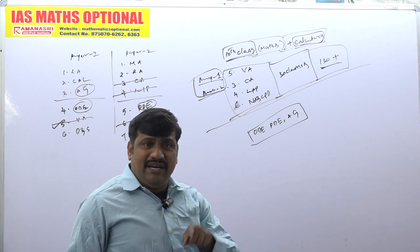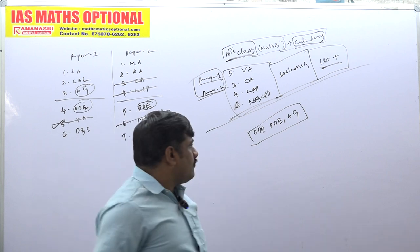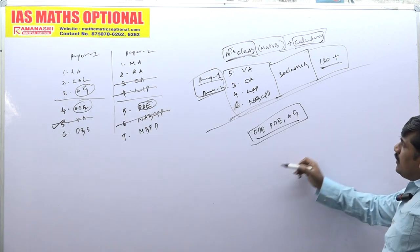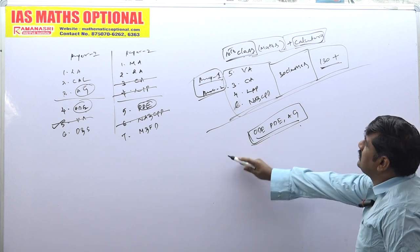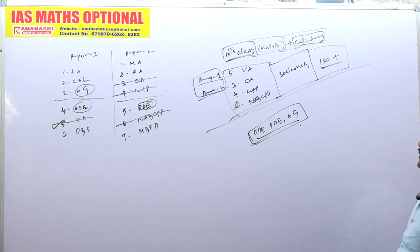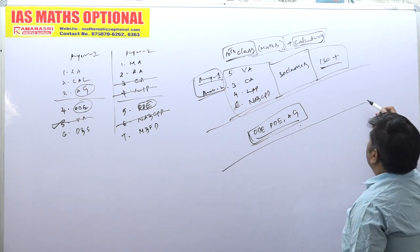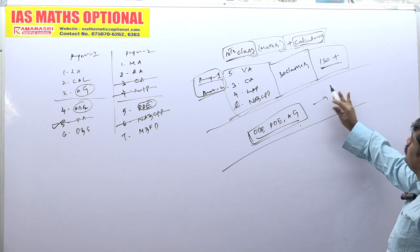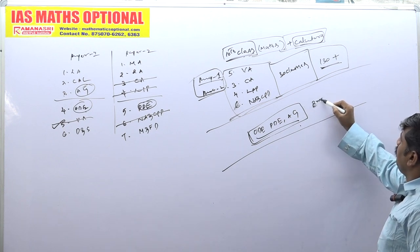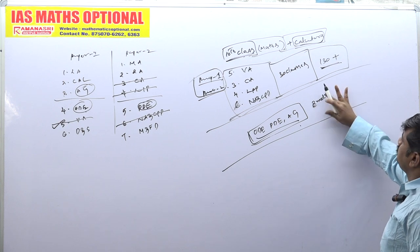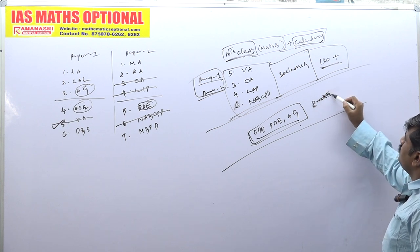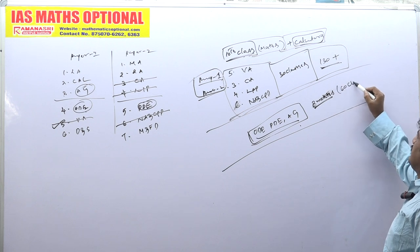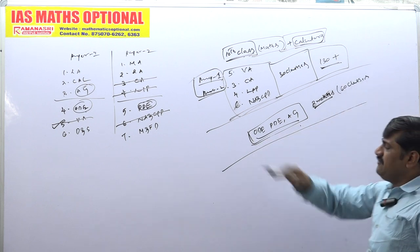For us, we need to solve all these things — analytical geometry, all these classes. This is the liveness block, and this one will take around two months of classes. Two months, maybe nothing but 60 classes. 60 classes is sufficient.